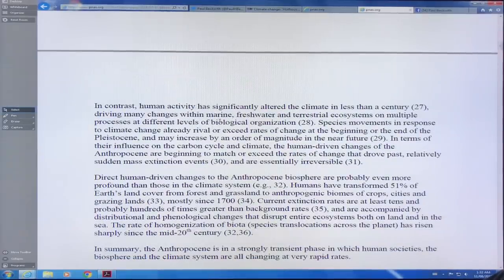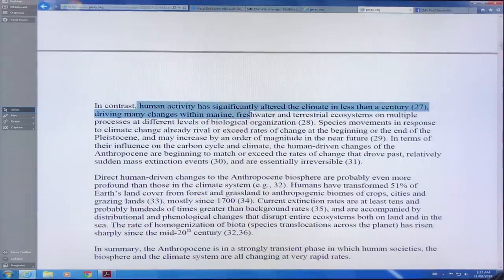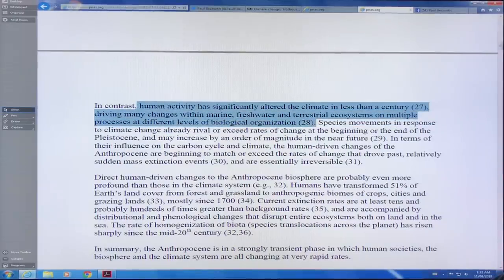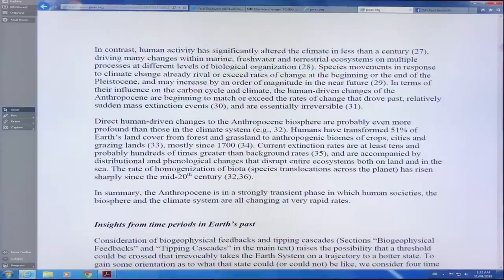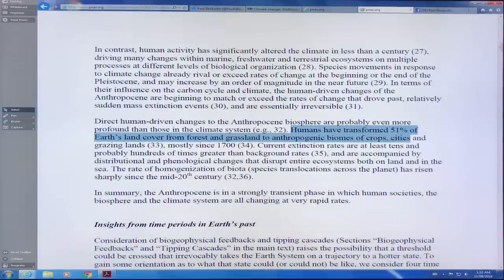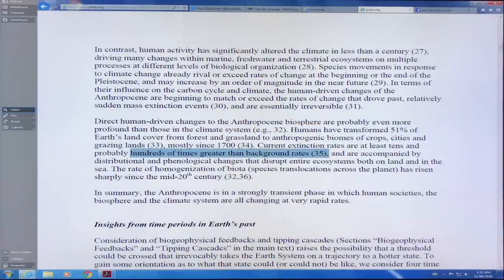All the human activity has significantly altered the climate in less than a century, driving many changes within marine, freshwater and terrestrial ecosystems on multiple processes at different levels of biological organization. Species are under stress. We've transformed 51% of Earth's land cover from forest and grassland to anthropogenic biomes of crops, cities, grazing lands, roads, you name it, mostly since 1700. Current extinction rates are at least tens and probably hundreds or more times greater than background rates.